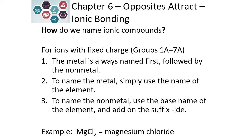The first type of compounds that we're going to name are for ions that have a fixed charge. This means that we know their charge and it doesn't change. This is for the metals in group one, group two, and aluminum. And we always name the metals first, followed by the nonmetal. So the name of the metal, you just simply write down the name of the element.